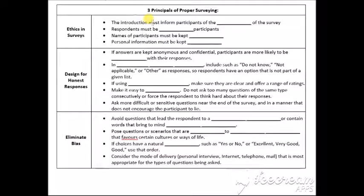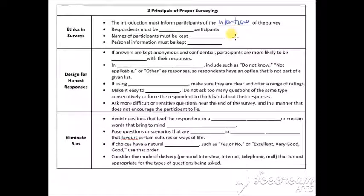Or maybe if you ask them for their occupation or where they work or how much money they make, they may lie about that because it's personal. And then you also want to test the survey if it was like a rough survey. So three principles in proper surveying. We're going to start with ethics in surveys. The introduction must inform participants of the intentions of the survey. Respondents must be willing.